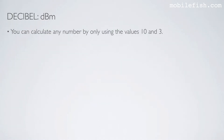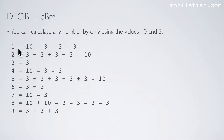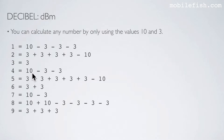You can calculate any dB number using only the values 10 and 3. For example: 1 can be calculated as 10 minus 3 minus 3 minus 3; 2 can be calculated as 3 plus 3 plus 3 plus 3 minus 10; 3 is simply 3; 4 is 10 minus 3 minus 3; and 5 is 3 plus 3 plus 3 plus 3 plus 3 minus 10. So you get the idea — try the rest yourself.